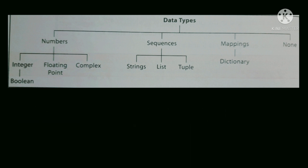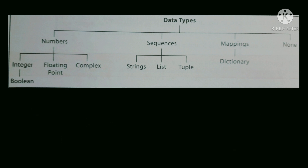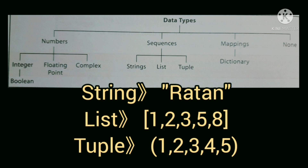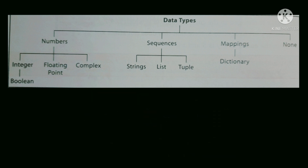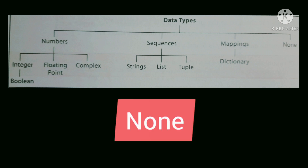Next we have complex numbers. In maths we write it as x + yi, but in Python we write it as x + yj — for example, 2+5j or 4-2j. Next we have sequence, which is a group of items with a well-defined ordering where each item is indexed by an integer; it contains strings, lists, and tuples. We also have mapping, where a mapping object maps immutable values to arbitrary objects — it includes dictionaries. Finally, there is None, a data type with a single value used to signify the absence of any value.